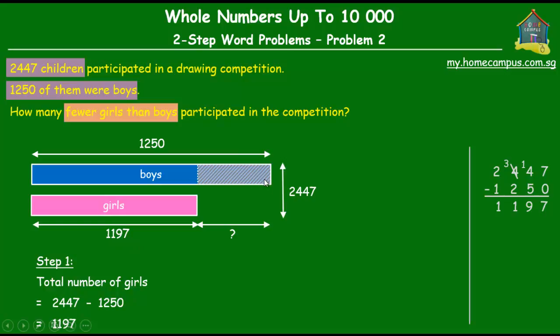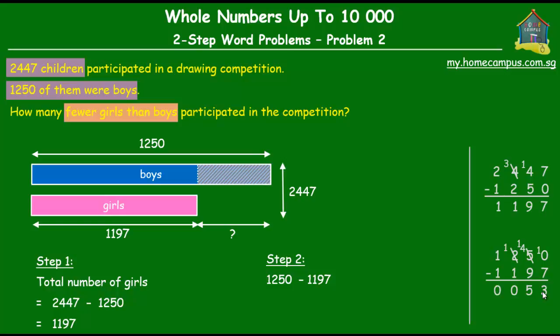Can we now find the difference between the two? We know how many fewer girls than boys there were — it's quite simple. All we have to do is subtract 1,197 from 1,250. That's the second step of the solution. Let's do the working here on the right of the screen. We will regroup the tens, and the answer is 53. So 1,250 minus 1,197 equals 53. There were 53 fewer girls than boys.